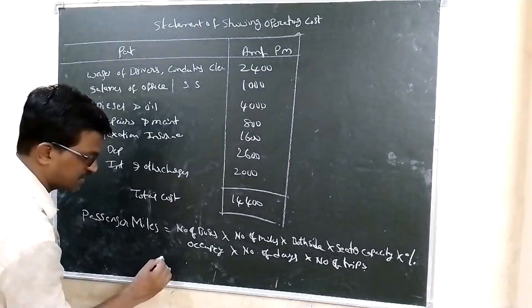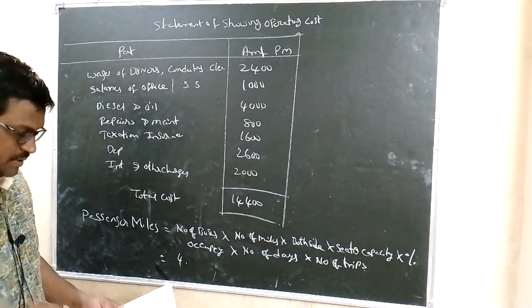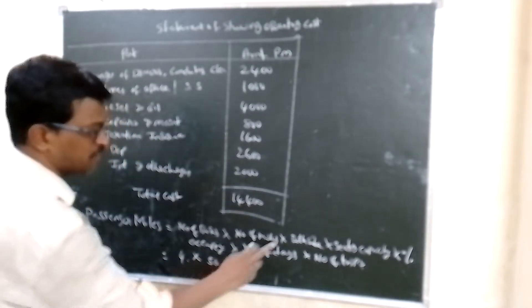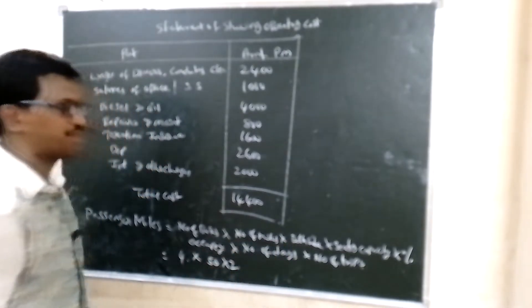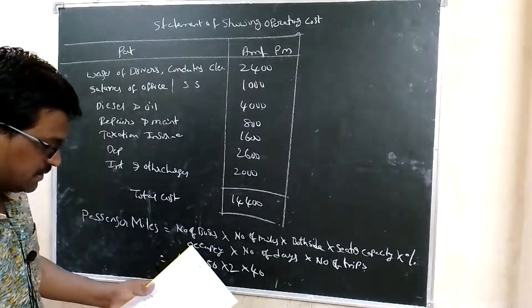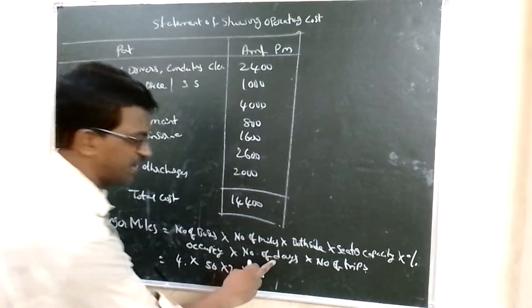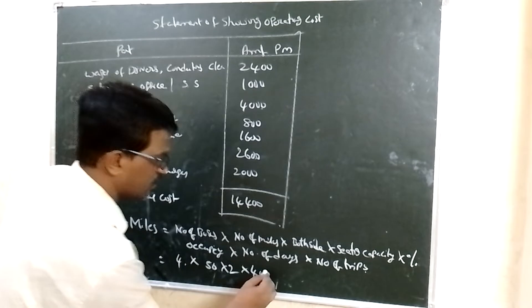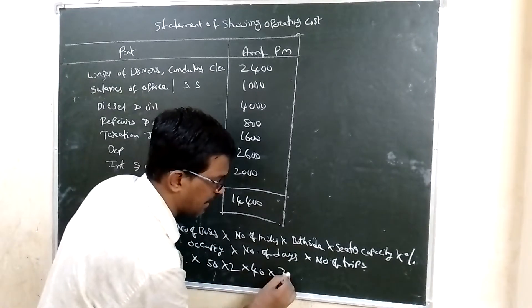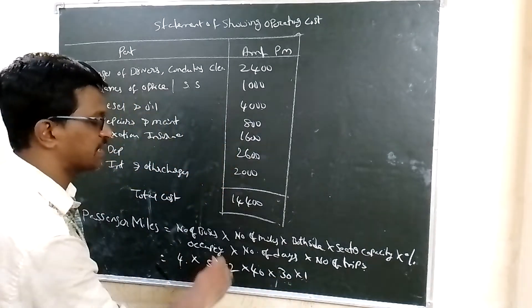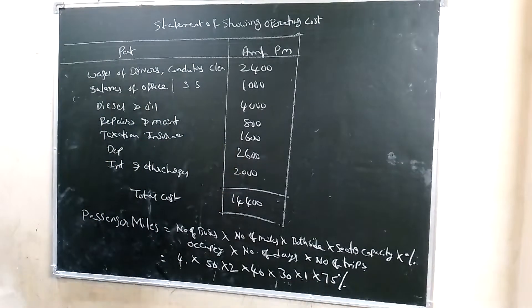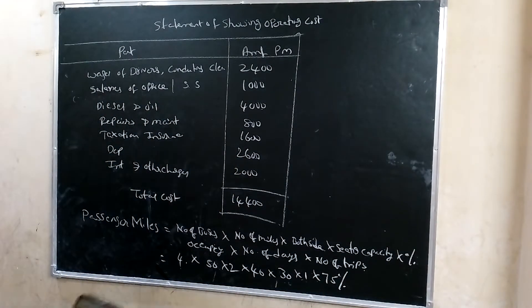Number of miles 50 miles single side, both sides into 2. Seating capacity is 40. Occupancy is 75 percent. Number of days is 30 days, so one trip. Occupancy capacity is 75 percent capacity.